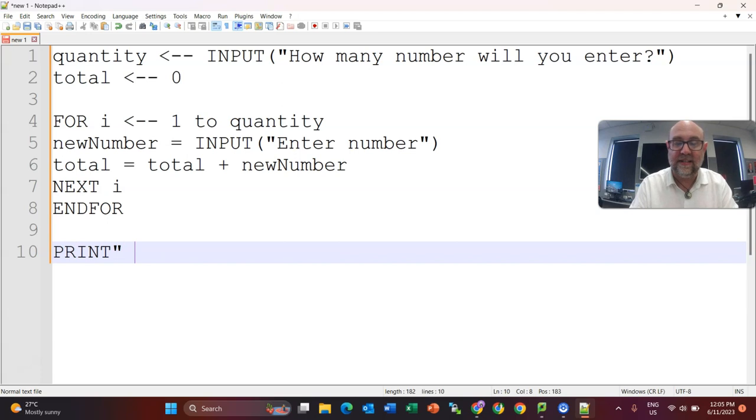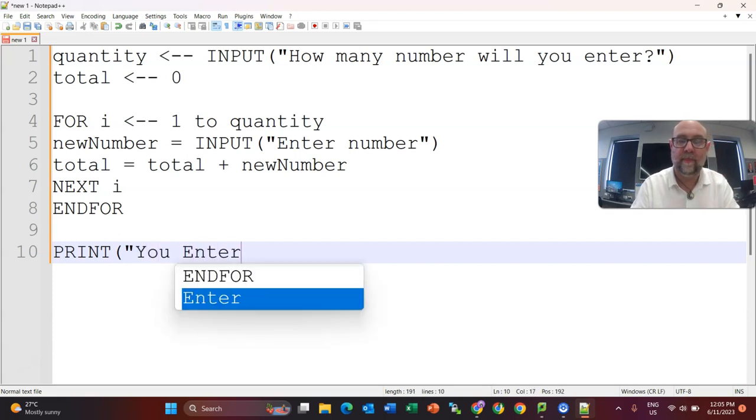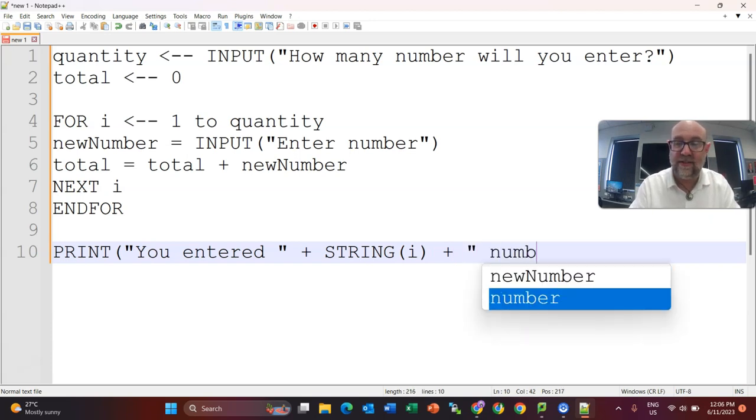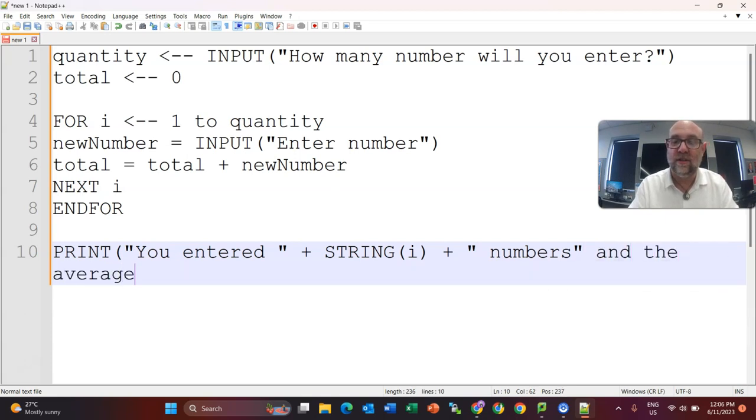So let's print that and say, you entered, well how many numbers did they enter? Well, they entered i numbers. Now, I'm going to say that I want that to be a string. I wouldn't necessarily have to, I could just say i, but I don't think it's a bad idea to say that I'm declaring that as a string.